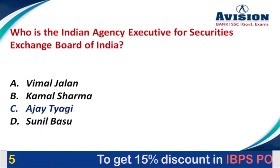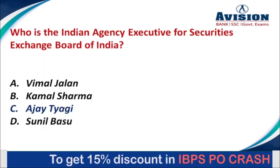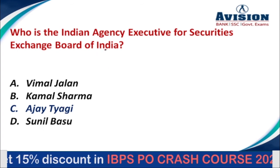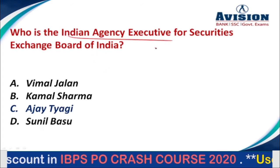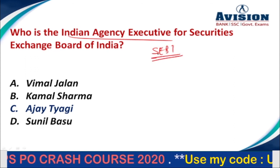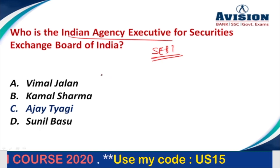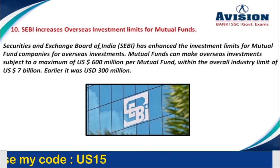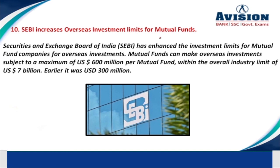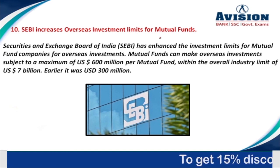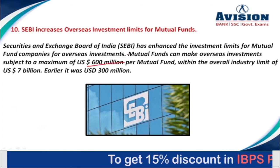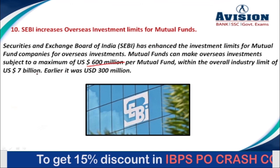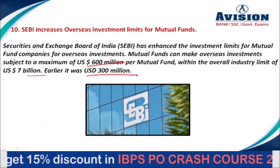Question number 10, the last question of this session: Who is the Chairman of the Securities and Exchange Board of India (SEBI)? Options are Vimal Jalan, Kamal Sharma, Ajay Tyagi, or Sunil Basu. The correct option is option C, that is Ajay Tyagi. SEBI has enhanced the investment limits for mutual fund companies for overseas investment. Mutual funds can now make overseas investments up to a maximum of US $600 million per mutual fund, within an overall industry limit of US $7 billion. Earlier, the limit was $300 million.